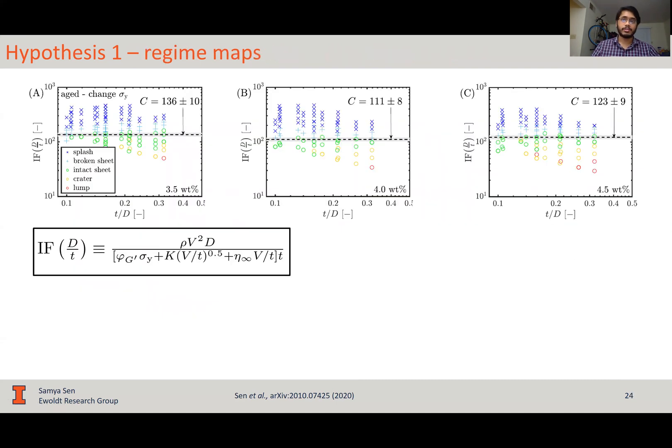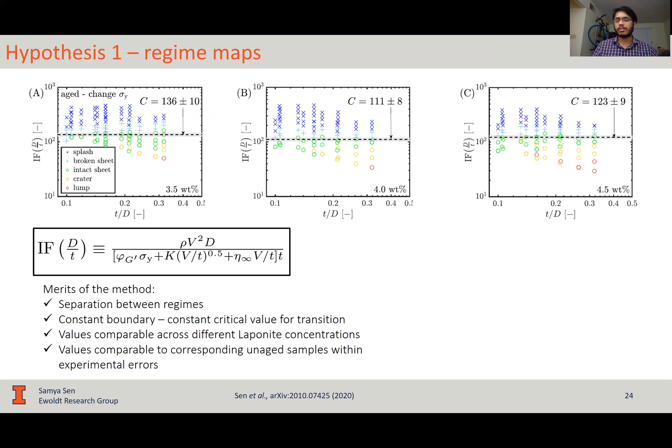Now, we plot the regime maps using this modified dimensionless group, this extra factor multiplying yield stress to gamma rate for thixotropic aging. As we see, all the good features are now back. There's still good separation between the regimes. The regime boundary is still a constant value for a stick splash transition, but now the values are comparable across the three laponite concentrations, as was the case with unaged laponite. And even more importantly, the values themselves are corresponding, comparable to the corresponding unaged samples within experimental and data fitting errors.